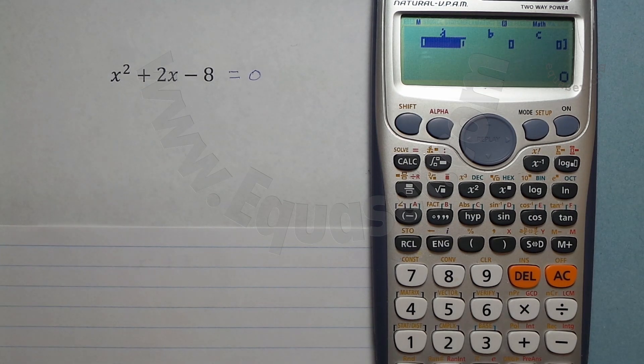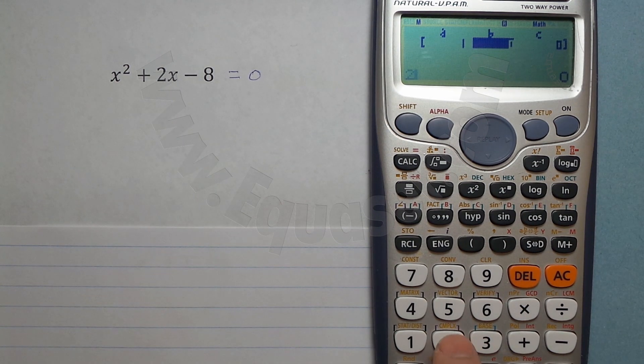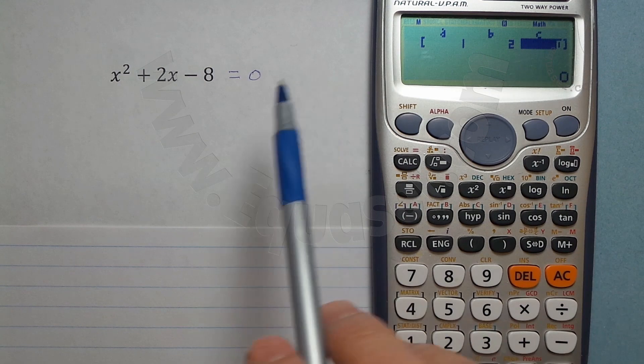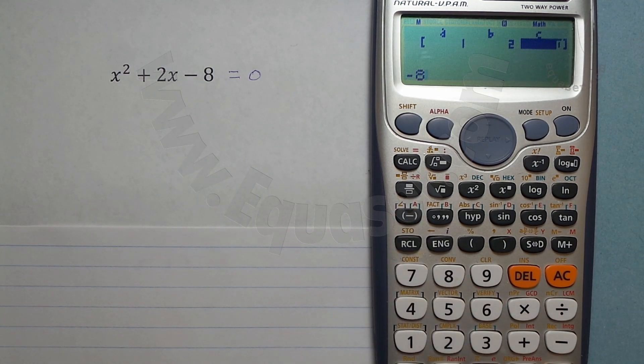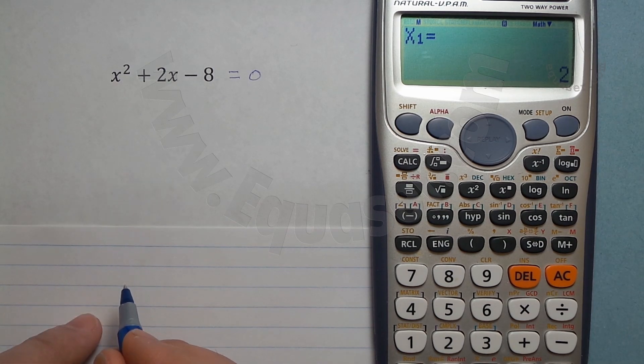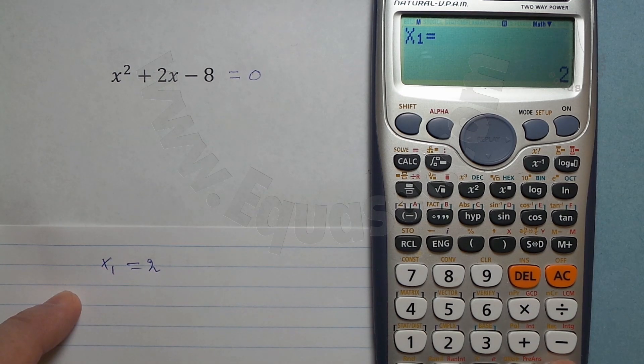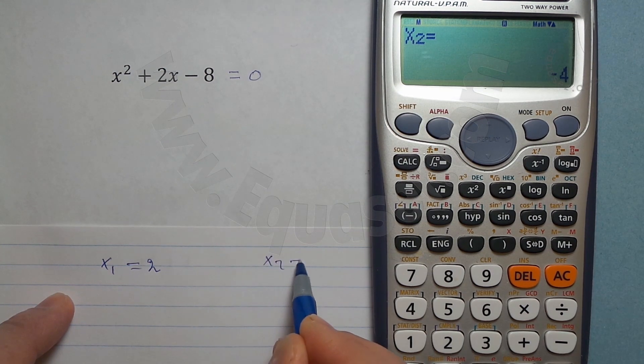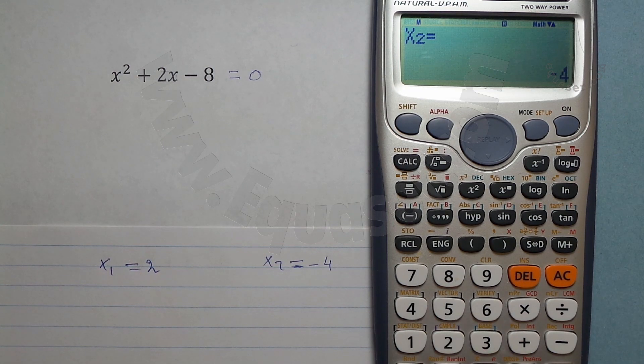So we press 3, and on the screen we have a, b, and c. The coefficient of x squared is 1, I press 1 and then equal sign. For b is 2, and the constant c is minus 8. We press this minus and then 8.